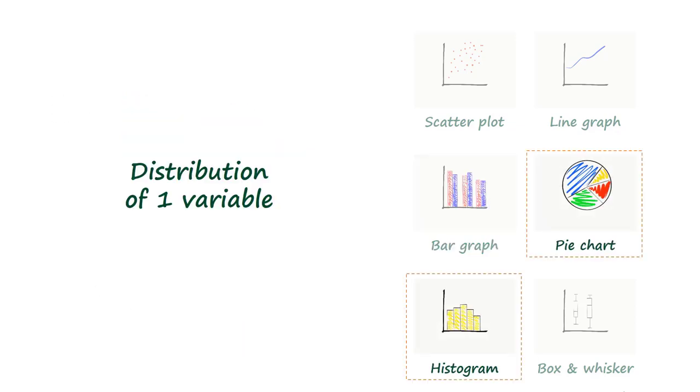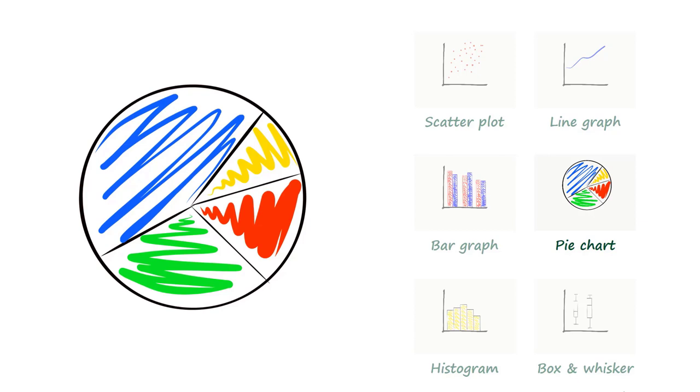Pie charts and histograms can be used to show the distribution of one variable. Pie charts are circular graphics that are divided into segments and are used to illustrate proportions. The size of each segment represents the proportion compared to the whole.